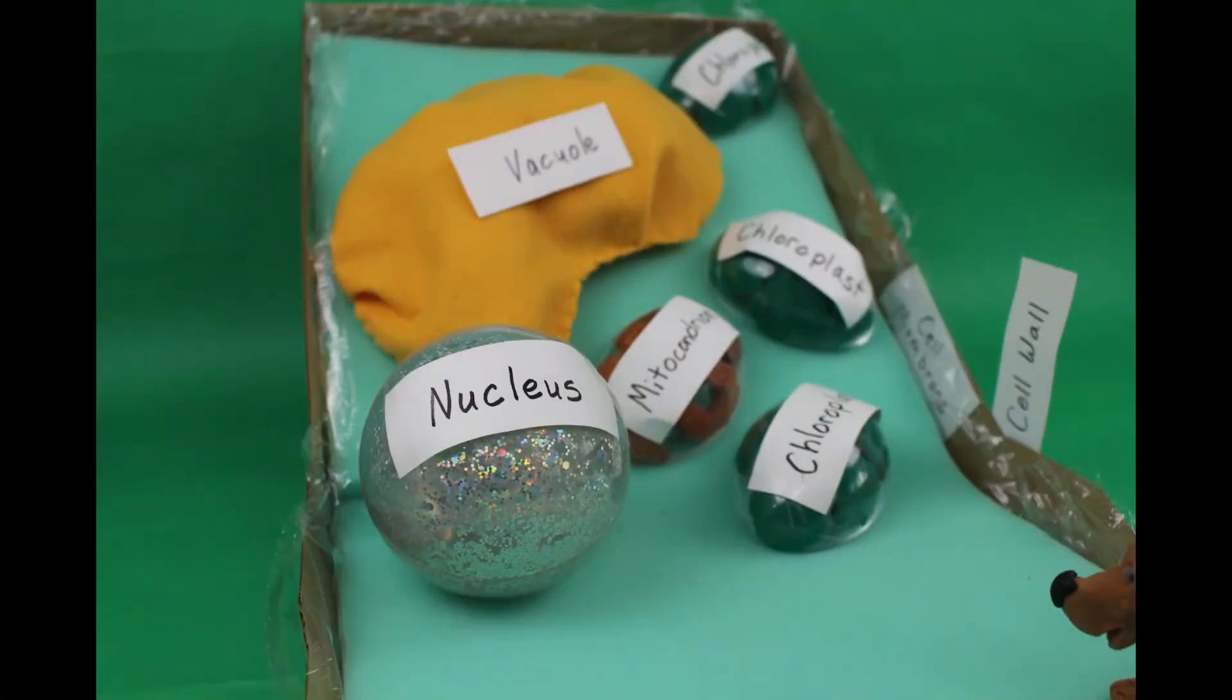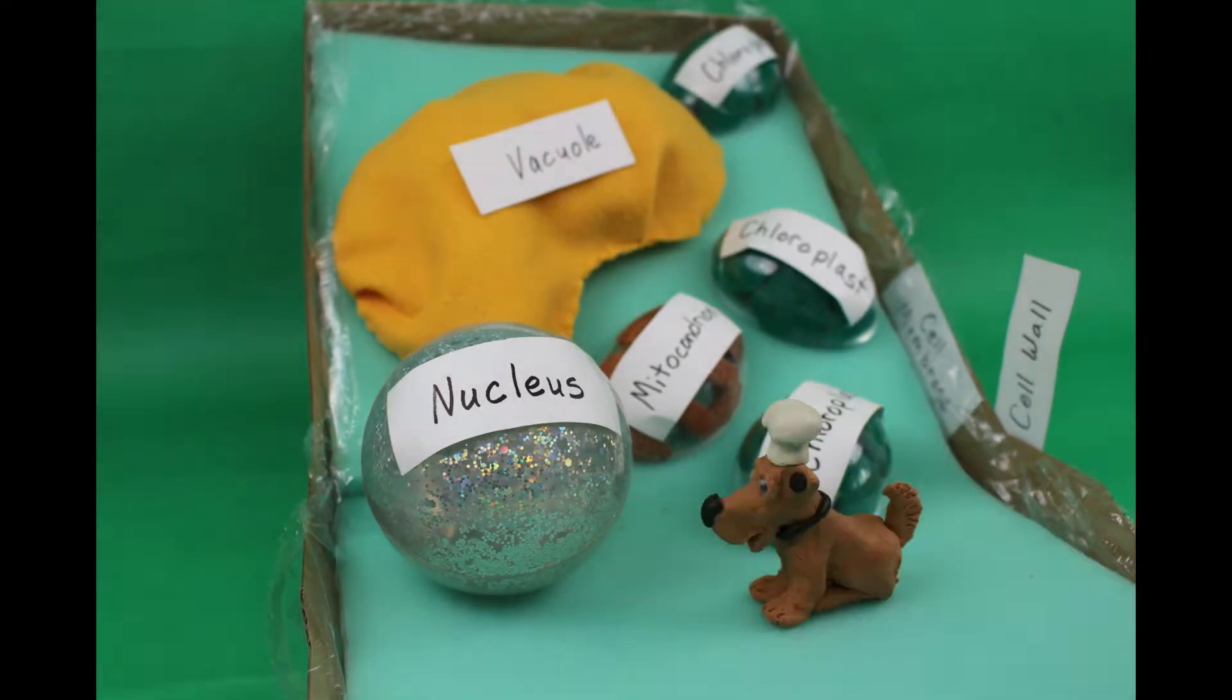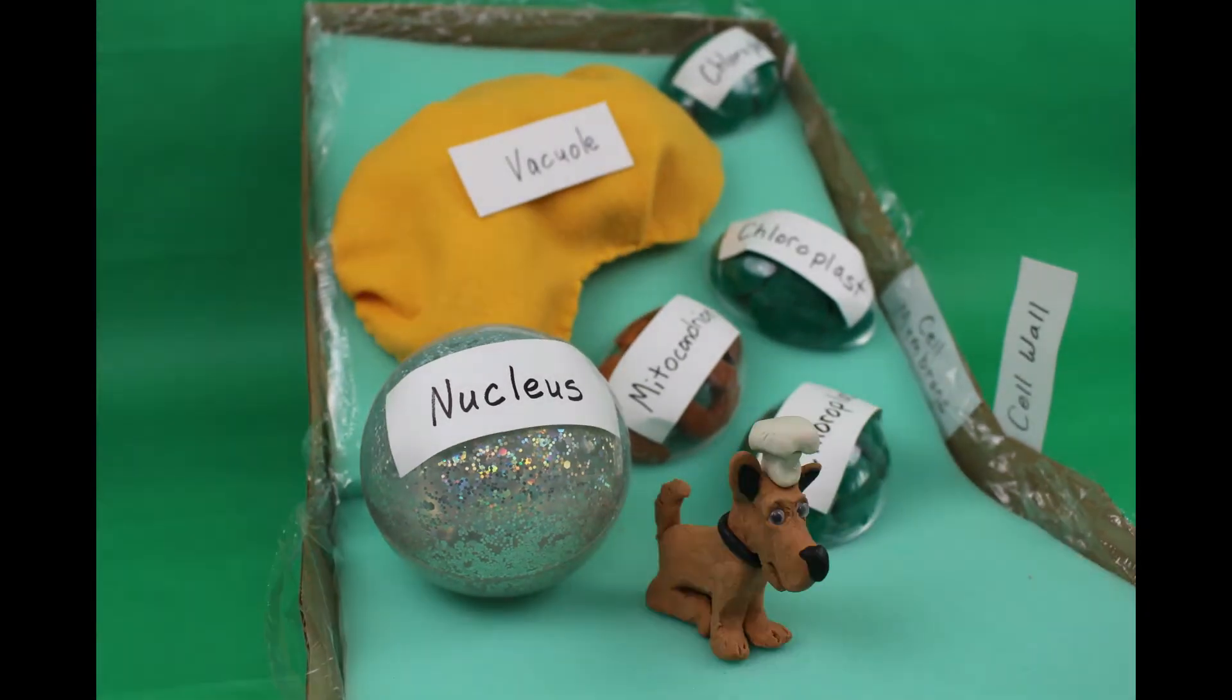If only we could shrink down to fit inside a plant cell. Oh, look, Cog. This plant cell has a cell membrane and a cell wall to protect it, a nucleus for DNA, a vacuole that primarily holds water. There's a mitochondrion that generates energy for the cell, and some chloroplasts.